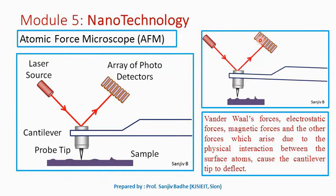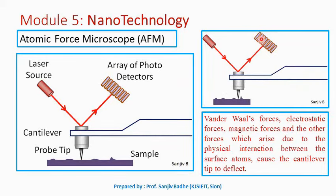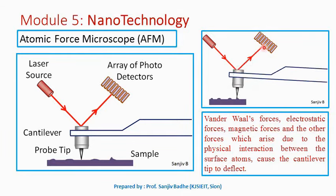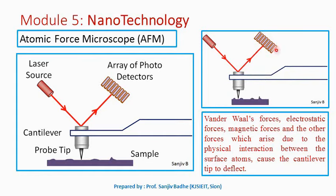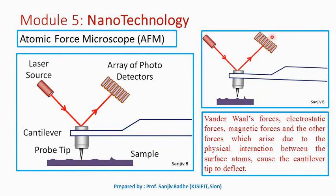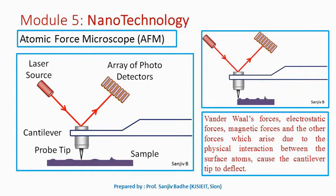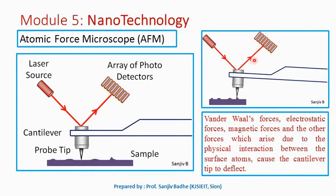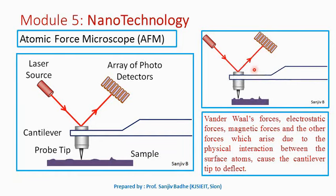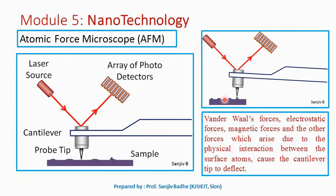Accordingly, the reflected light rays will be collected by different photodetectors in the array. We can find the amount of deflection produced in the reflected laser beam by analyzing which photodetector is collecting that particular laser beam. This analysis can be done with the help of computer-controlled devices, and analysis of this deflection will help us in producing a 3D image of the sample surface.